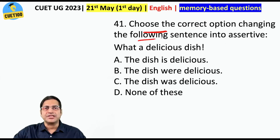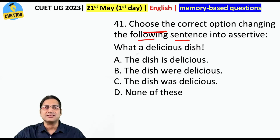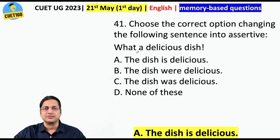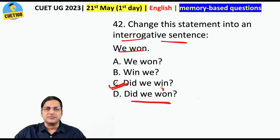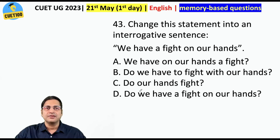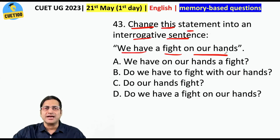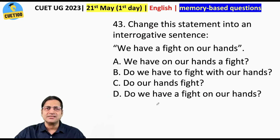Choose the correct option changing the sentence into assertive. 'What a delicious dish!' — while having a meal you mostly say this. It just means 'the dish is delicious.' Change 'We won' into an interrogative sentence — 'Did we win?' The problem with a wrong option is it has double past: 'won' and 'did' — you cannot use both. Another: 'We have a fight on our hands' — 'Do we have a fight on our hands?' That should be your answer. Don't you think most of these questions are grade 6–7 level?